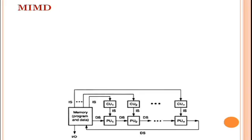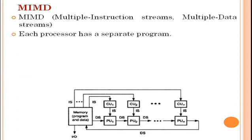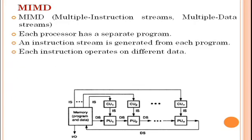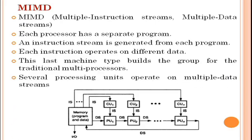MIMD is Multiple Instruction Streams and Multiple Data Streams. Each processor has a separate program and an instruction stream is generated from each program, with each instruction operating on different data. This machine type builds the group for traditional multi-processors, where several processing units operate on multiple data streams.